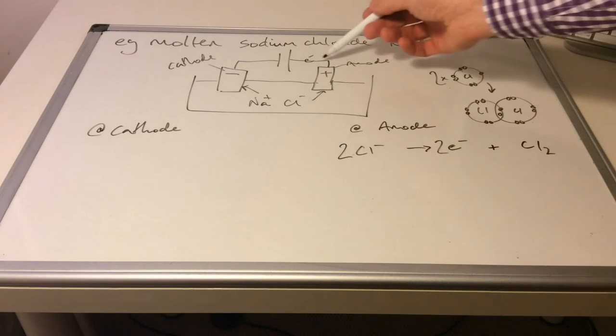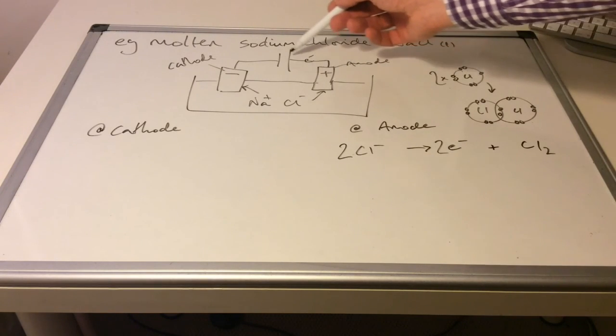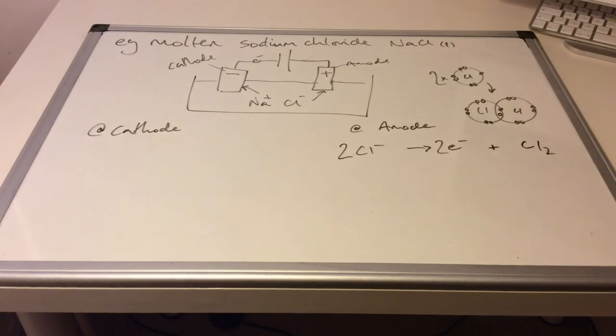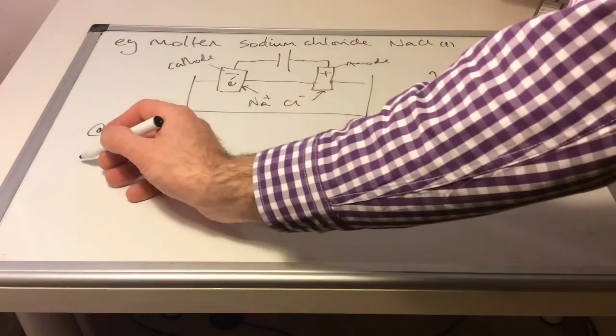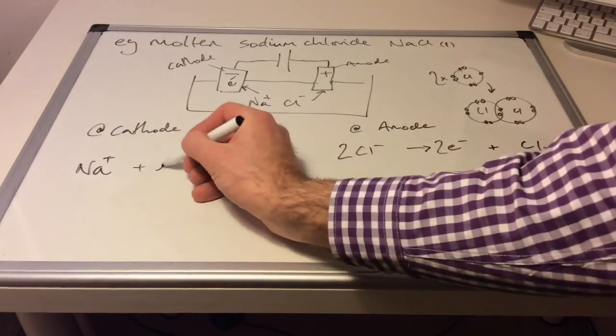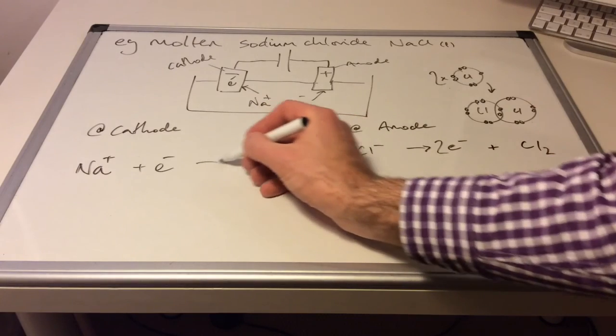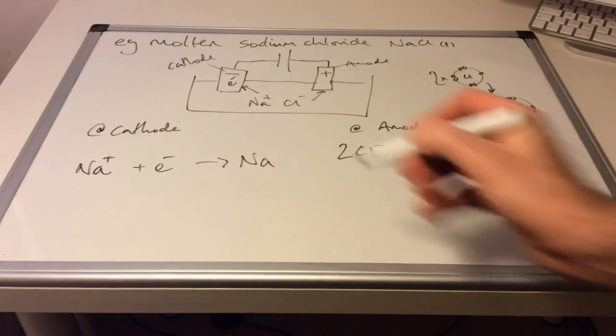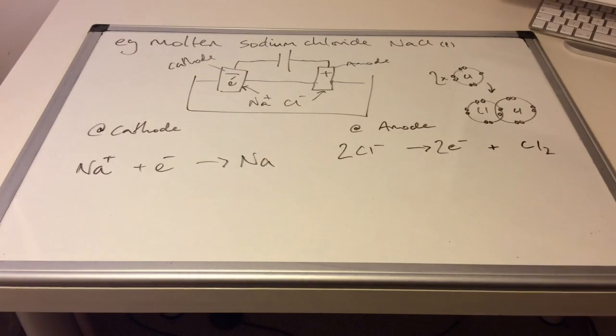So the half equation would look like that. So there's one of the electrons on its way around to the cathode. You can see it's arrived there now. So what do you think is going to happen? Well the sodium ion can gain that electron and become a sodium atom.